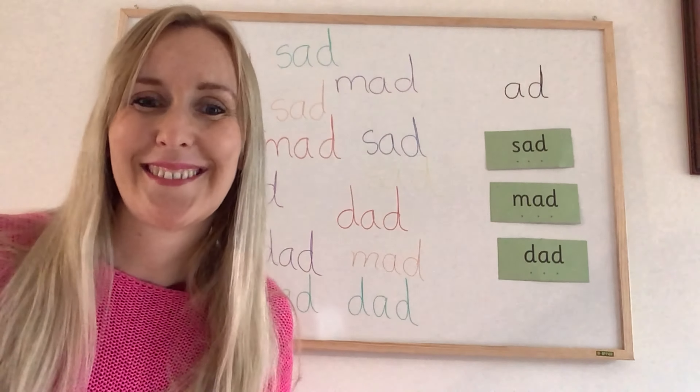Keep going until you've filled your paper with lots of different colours, then practice pointing at them and saying the word. Maybe you could play a game to see who can point to a word first — can you point to a red mad? Can you point to a green sad? Make up some games and make sure you can really read these words well today. Sad, mad, dad — have fun!